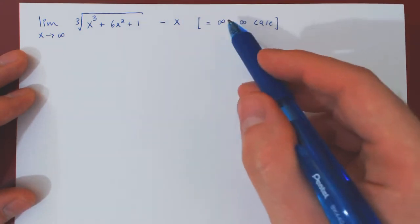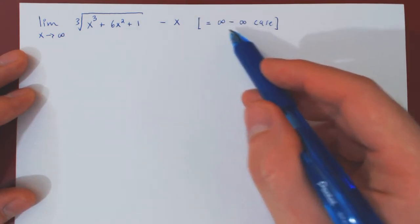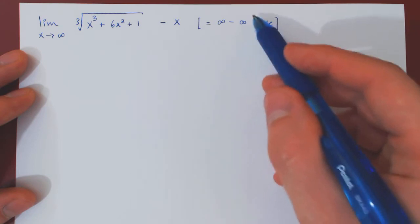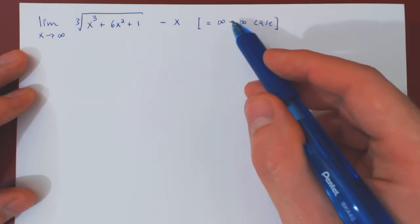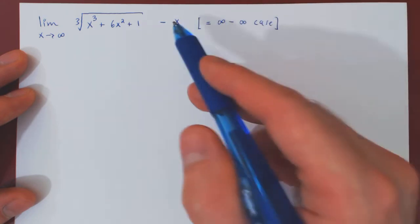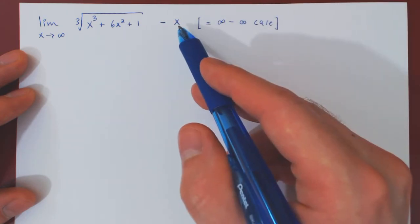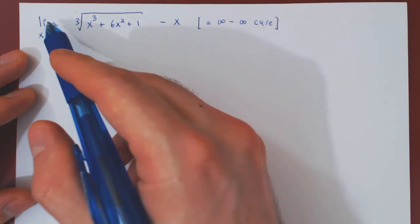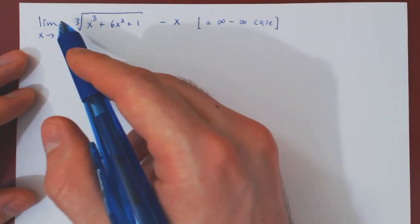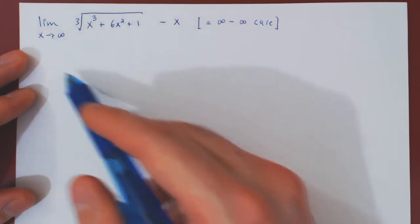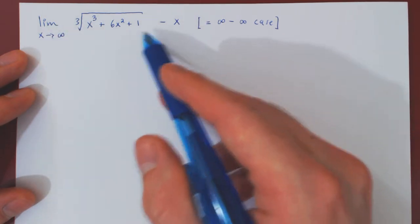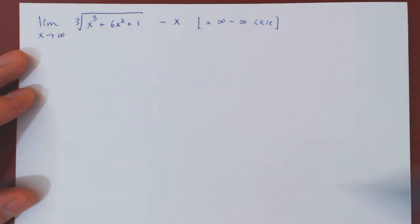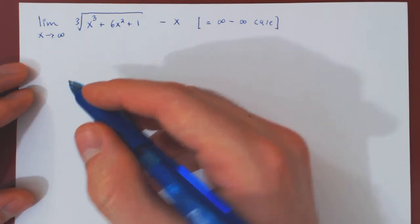It's clear that we cannot apply L'Hôpital's rule yet. So the idea will be to factor an x from this expression, and then send x as a 1 over x to the denominator, and then we will be able to apply L'Hôpital's rule.